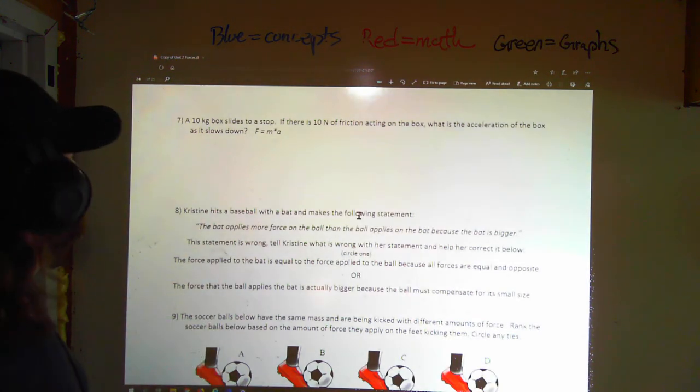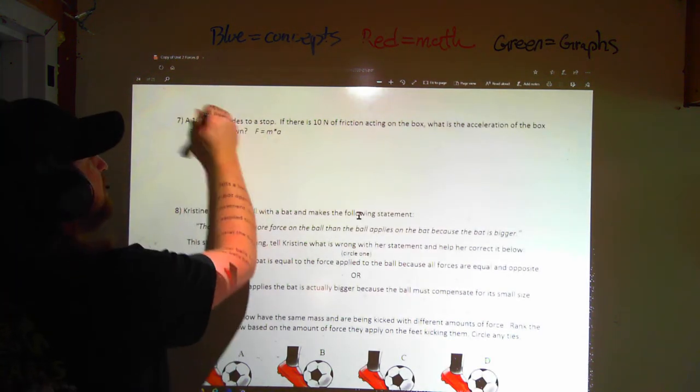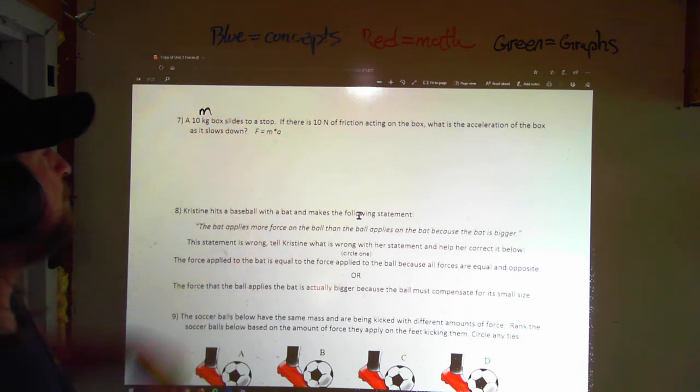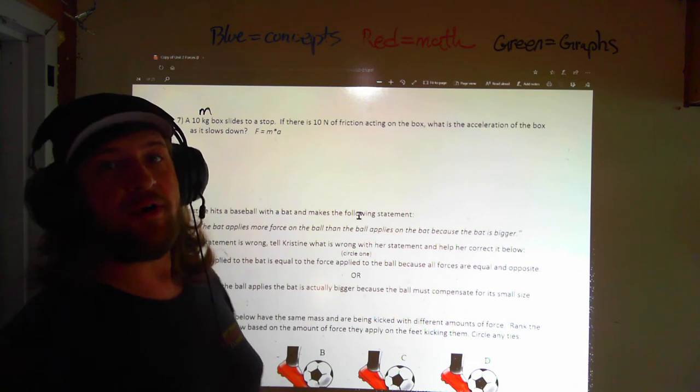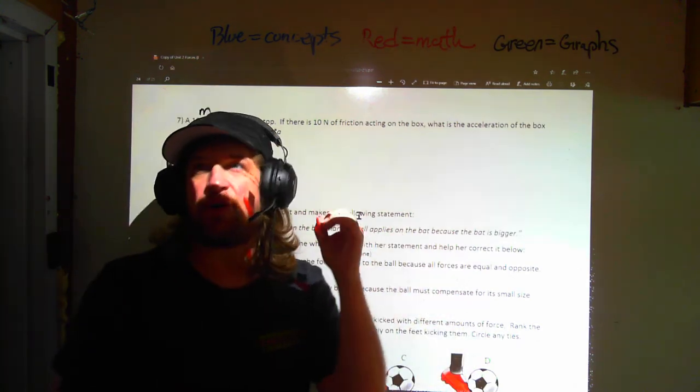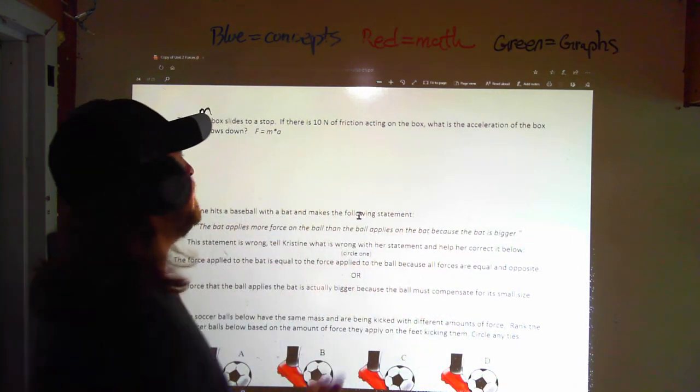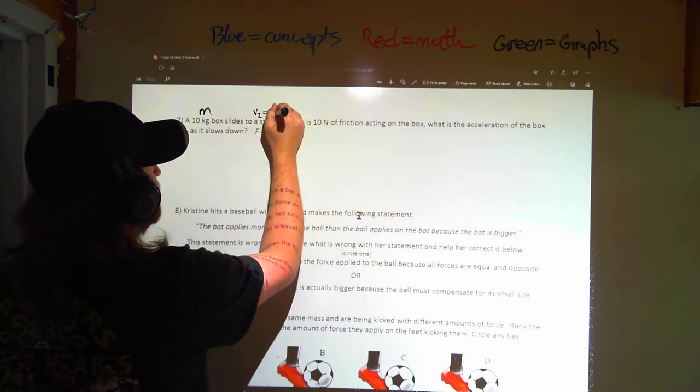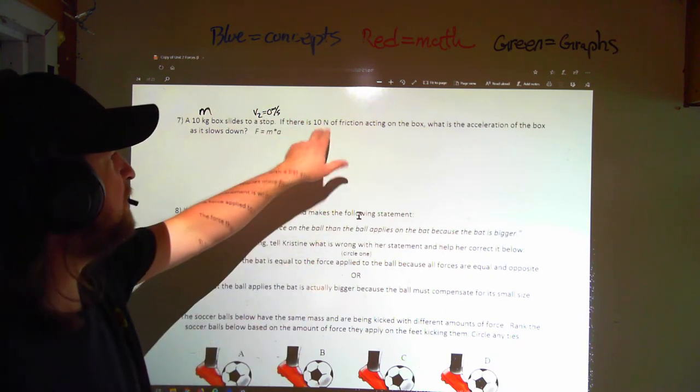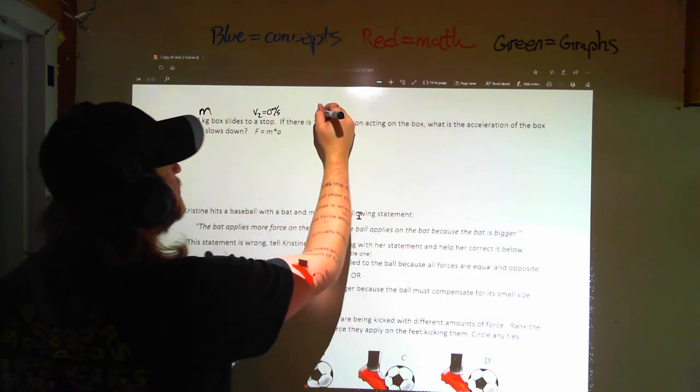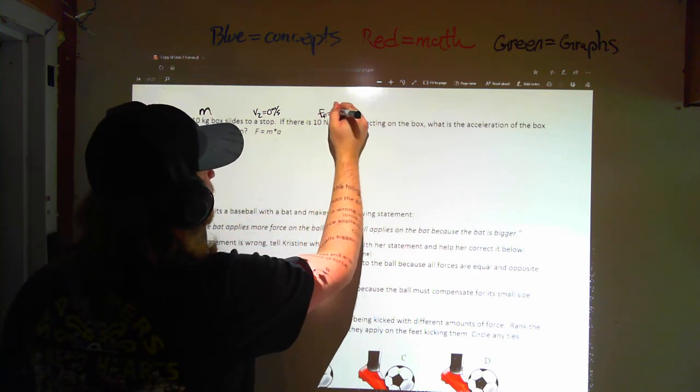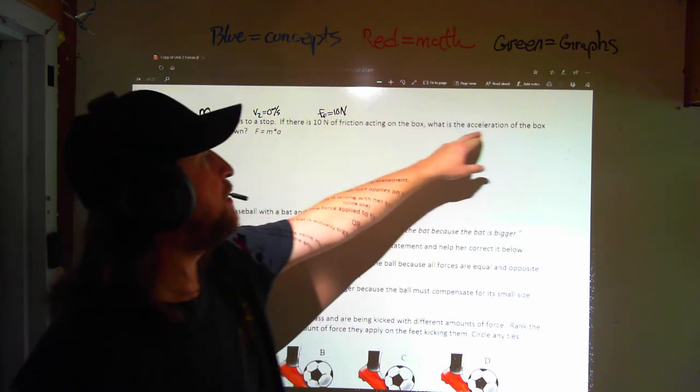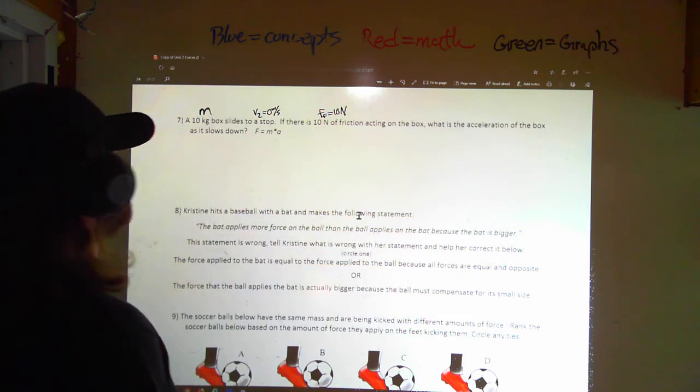We will be picking up on problem seven right here. In problem seven, we have a 10-kilogram box. That's our mass. It's sliding to a stop. Now, hopefully by now many of us are picking up on this whole, if we come to a stop thing that tells us V2 is 0 meters per second. If there is 10 newtons of friction, that's FF acting on the box, what is the acceleration of the box as it slows down?